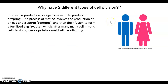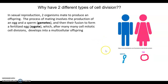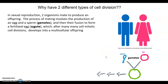So why have two different types of cell division? In sexual reproduction, two organisms mate to produce an offspring. The process of mating involves the production of an egg and a sperm — these are called gametes. They ultimately fuse to form a fertilized egg, also known as a zygote. After many, many mitotic cell divisions, this zygote then develops into a multicellular offspring.